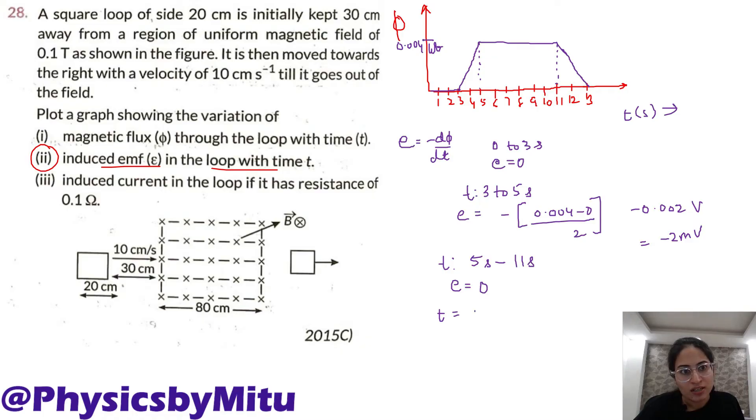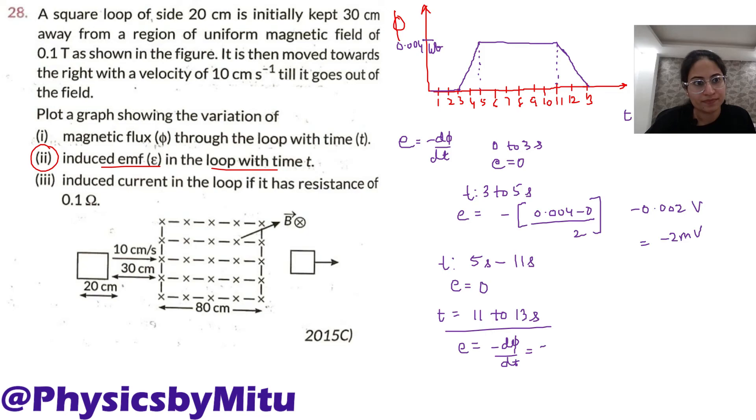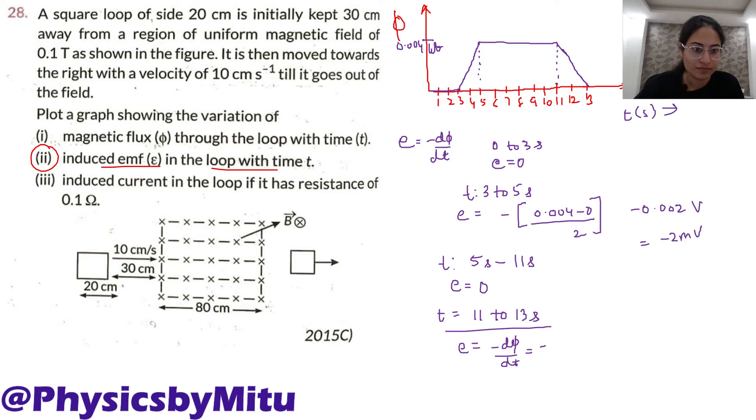From time 11 seconds to 13 seconds, EMF is minus dΦ by dt. You will write minus, final is 0, initial 0.004 upon time 2 seconds. So plus 0.002 volt which is 2 millivolt.